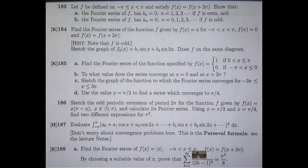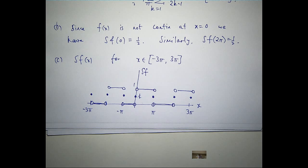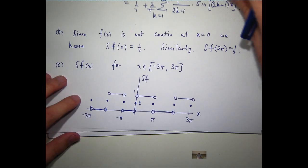Part D asks you to use the value x equals pi on 2 to find a series which converges to pi on 4. Now, a Fourier series can be used to evaluate the value of an infinite series. Think back to first year. We saw series. We were interested in whether a series converged or diverged. We had all these tests. Now, a Fourier series actually can give us the opportunity to find the value of an infinite series. And this is hugely difficult otherwise. So let's have a look at D.